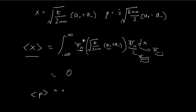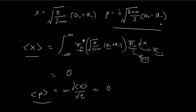Since this is 0, using the formula, the expected value of momentum is also 0. Another way to check is to apply the momentum formula into the integral directly — a-plus and a-minus create orthogonal functions, and the integral becomes 0. So we now know that the expected values of x and p are both 0.